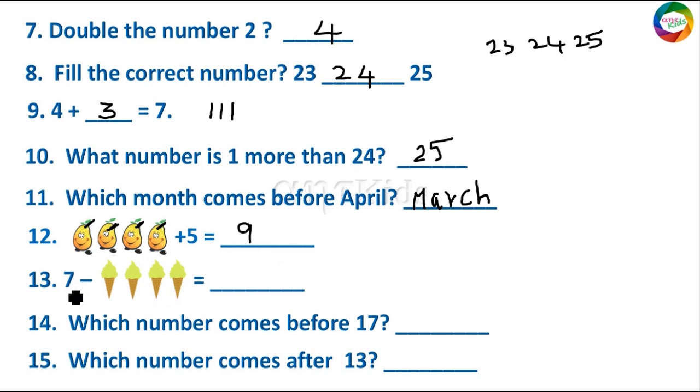And here you have to subtract 7 from the ice creams. So you have to use the backward count here. Before 7, you have to reduce from 7. That is use the backward count. 6, 5, 4, 3. So you have number 3. So 7 minus 4 is 3 here.